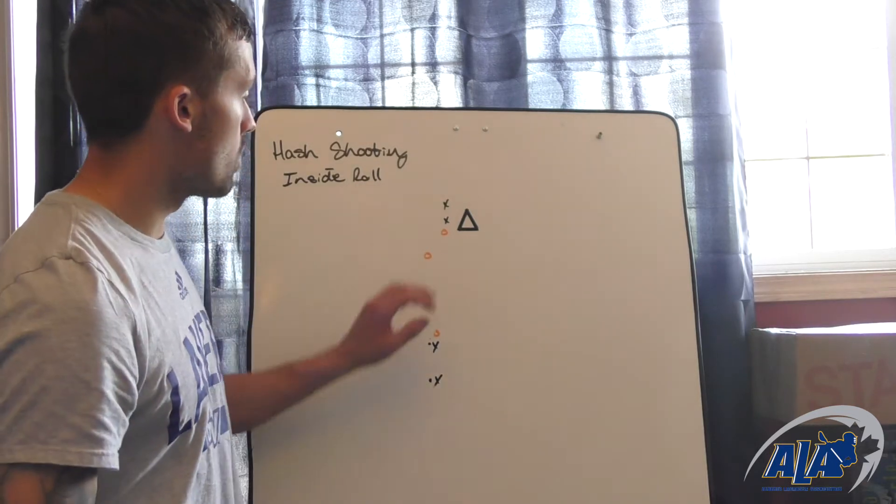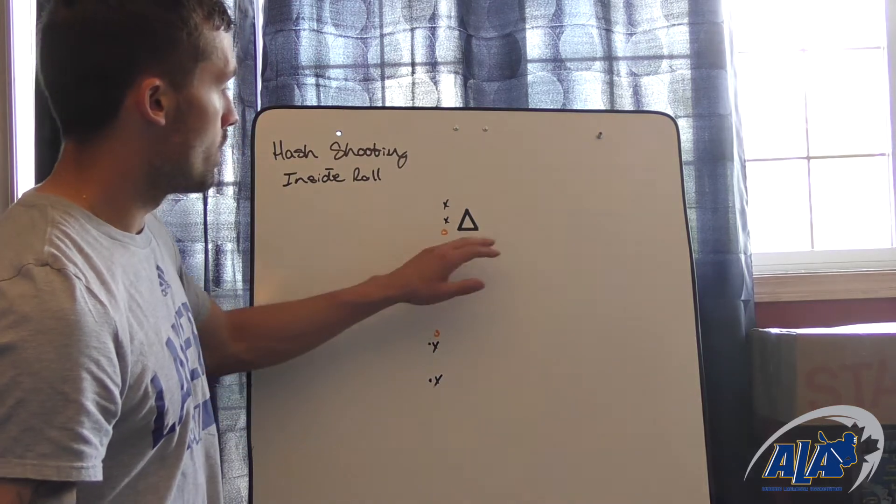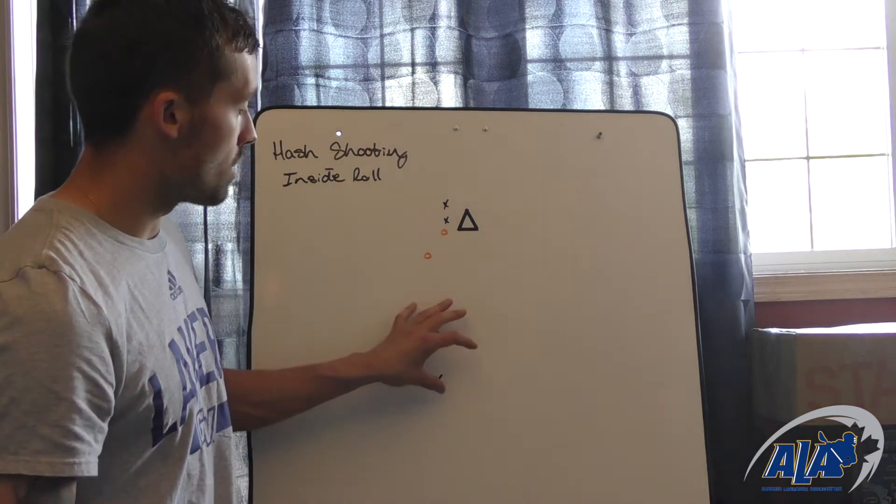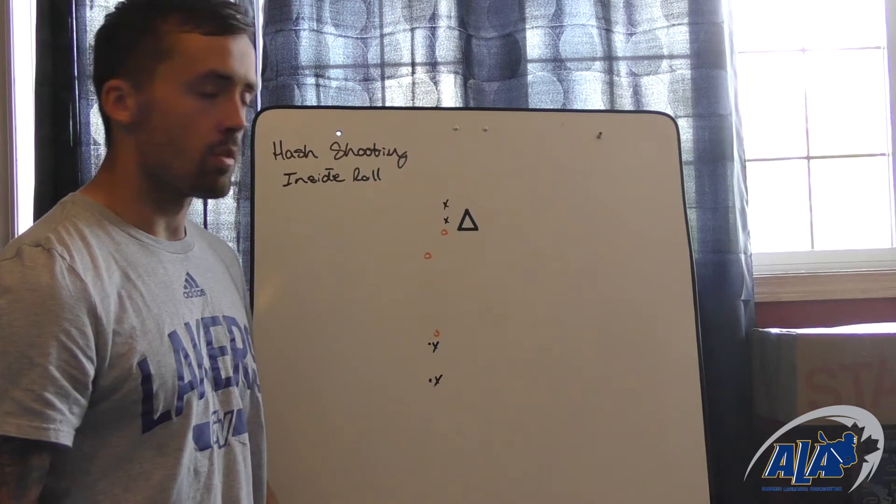So how this drill is set up is we'll have a line down here with two cones going up and away from the net, and then we'll have another line up here where the balls will be.